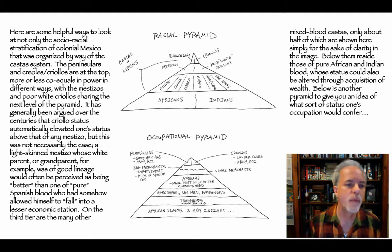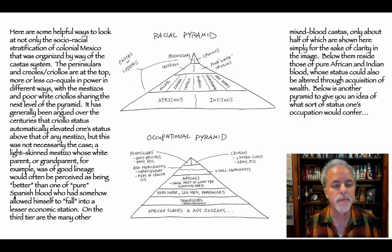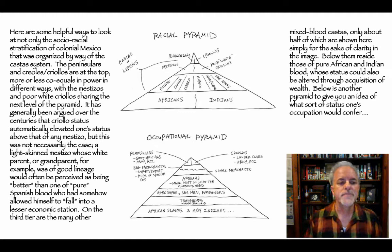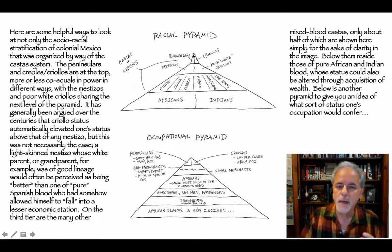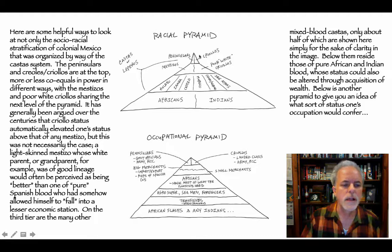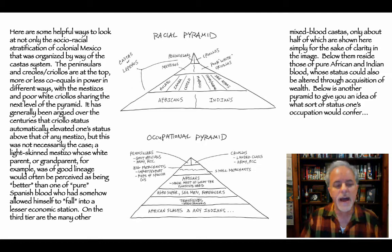Here are some helpful ways to look at the socio-racial stratification of colonial Mexico organized by the casta system. Peninsulares and criollos are at the top, sharing power — peninsulares have more governmental power, but in terms of racial power they are more or less co-equals. Mestizos and poor white criollos form the next level. It has generally been argued that criollo status automatically elevated one above any mestizo, but a light-skinned mestizo of good lineage would often be perceived as better than a Spaniard who had fallen into a lesser economic station.